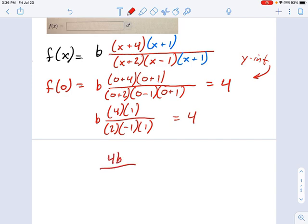And on the top, we have 4b. On the bottom, we have negative 2. So that means 4b equals negative 8, and that means b equals negative 2.